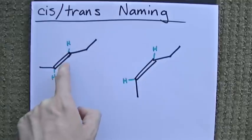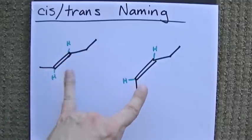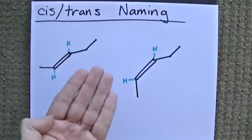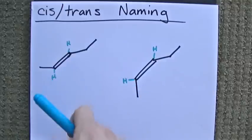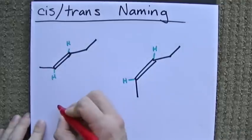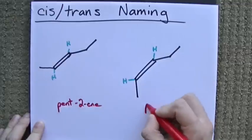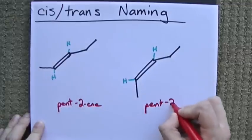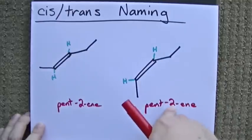Because these bonds can't rotate the same way single bonds can, these configurations are fixed, and these are technically two different molecules. Each atom is connected to the same types of atoms, but the way that they're arranged is fixed in a different configuration. In any case, where I'm going with this is that both of these compounds are pent-two-ene.